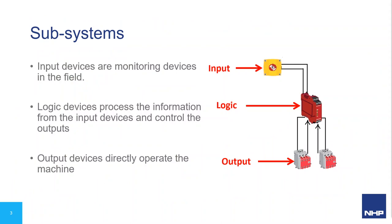A safety control system can typically be broken down into three subsystems: the input, logic, and output subsystems. All safety devices play at least one of these roles. The input devices monitor what happens in the field, the logic devices process the information and determine what to do based on a program, and the output devices actuate when commanded by the logic. This system shows an emergency stop as the input, a safety monitoring relay as the logic, and a pair of safety contactors as the output. The safety monitoring relay determines if the emergency stop is pressed and de-energizes the contactors to remove power from the machine.